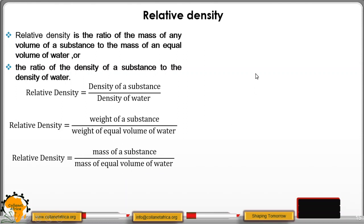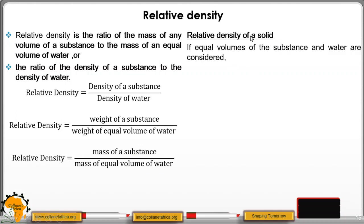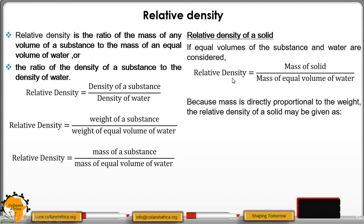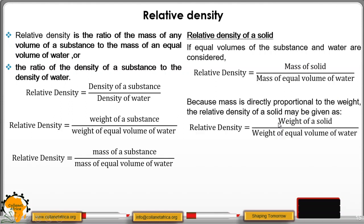We now move to the relative density of a solid. When finding the relative density of a solid, we consider equal volumes of that solid and water. Therefore, relative density equals the mass of a solid divided by the mass of equal volume of water. Since mass is directly proportional to weight, relative density also equals the weight of a solid divided by the weight of equal volume of water.